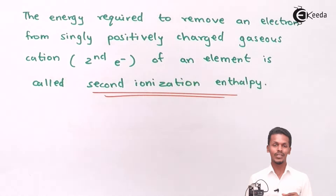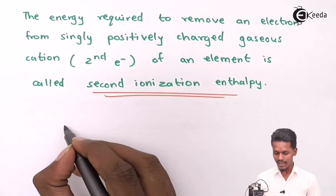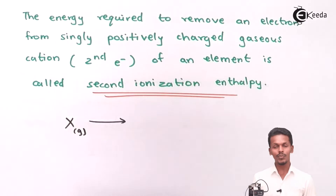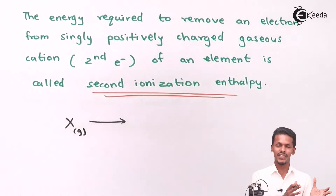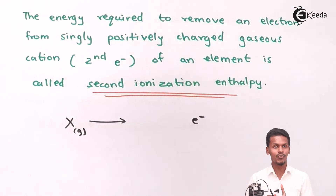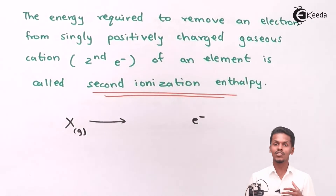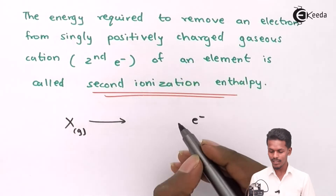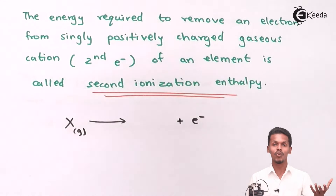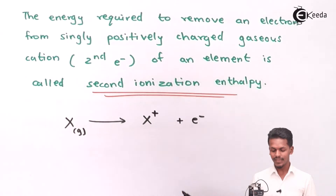Let me give a small representation to understand first and second ionization enthalpy. Suppose we have an atom named X in the gaseous state, and we remove the loosely bonded electron present in the outermost shell. Because an electron has been removed, a positive charge is generated — the number of protons becomes greater than the number of electrons — and the atom turns into an X⁺ ion.